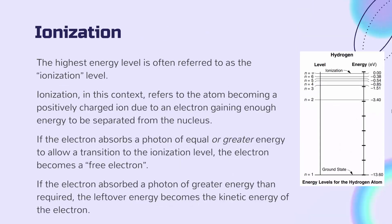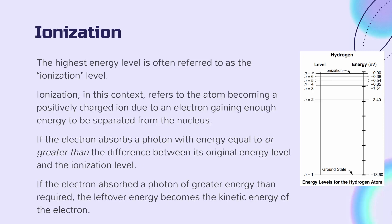Let's talk about ionization. The highest energy level is often referred to as the ionization level. In this context, ionization refers to when the atom becomes positively charged due to the electron gaining enough energy to be separated from the nucleus. This can happen if the electron absorbs a photon with energy equal to or greater than the difference between its original energy level and the ionization level. If the electron absorbs a photon of greater energy than is required, the leftover energy will become the kinetic energy of the electron.